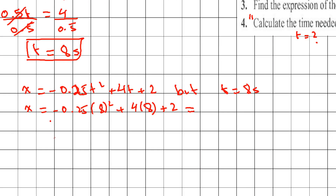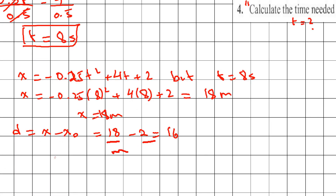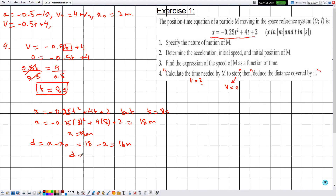Evaluating that expression gives x = 18 m (all quantities in SI). The distance is then d = x - x₀ = 18 - 2 = 16 m. Since both x and x₀ are in meters, the distance covered by the particle is d = 16 meters.